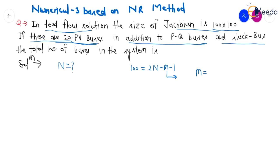So here it is 20 PV buses and here it is a slack bus. Here in the question, so 20 plus 1 slack bus that will become 21. So M is equal to 21.